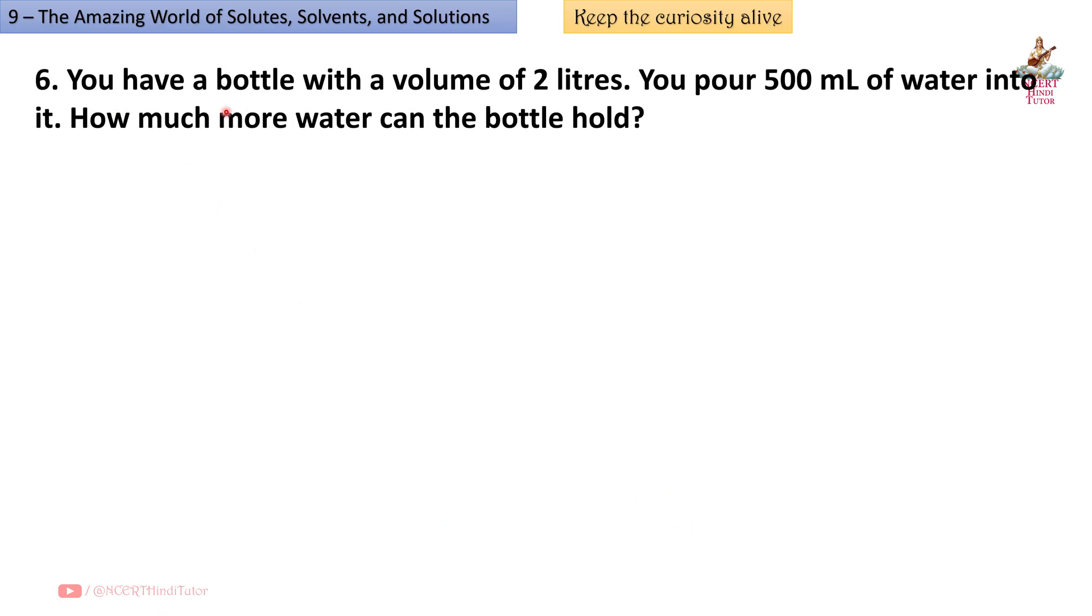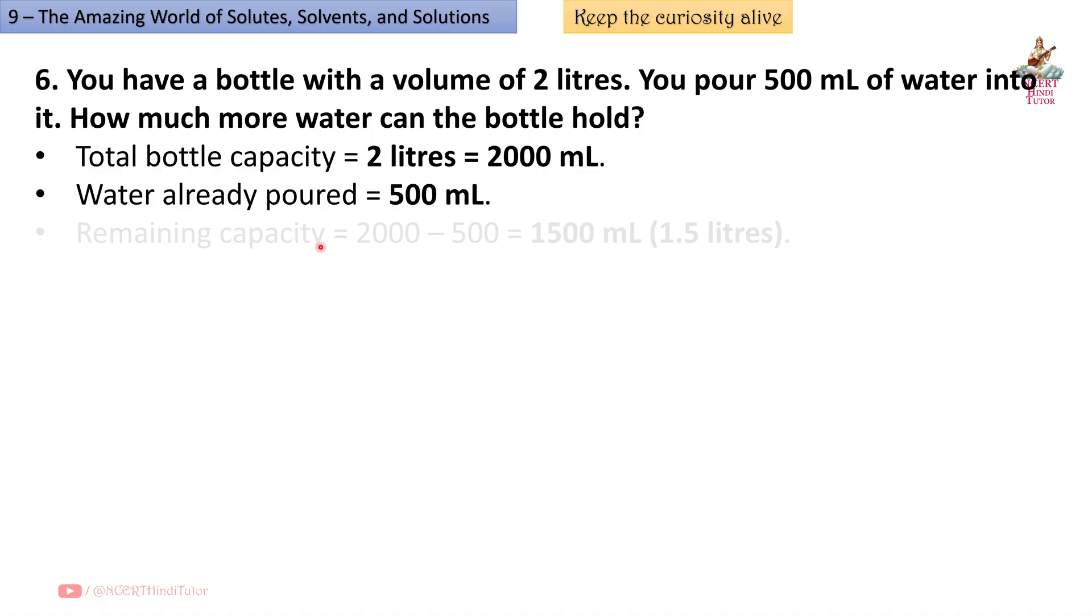Question 6: You have a bottle with a volume of 2 liters. You pour 500 ml of water into it. How much more water can the bottle hold? Answer: Total bottle capacity 2 liters equals 2000 ml. Water already poured 500 ml. So remaining capacity equals 2000 minus 500 equals 1500 ml, that is 1.5 liters. So answer, the bottle can hold 1500 ml more water.